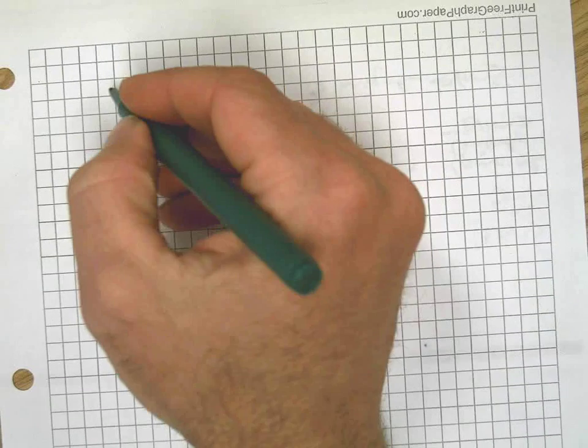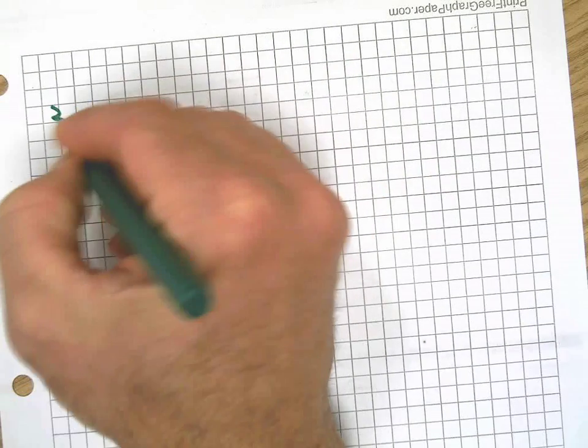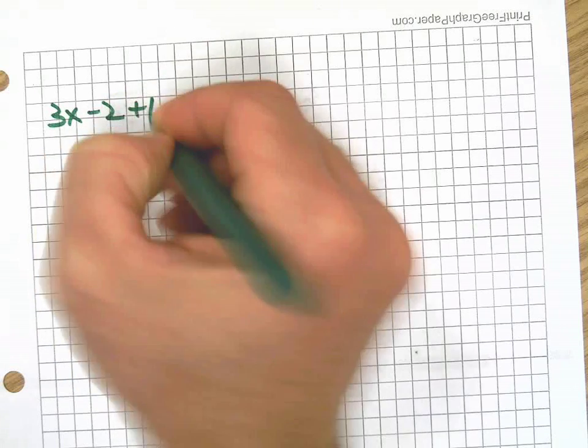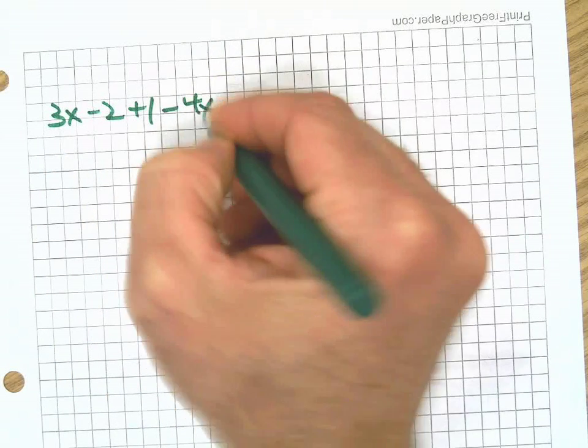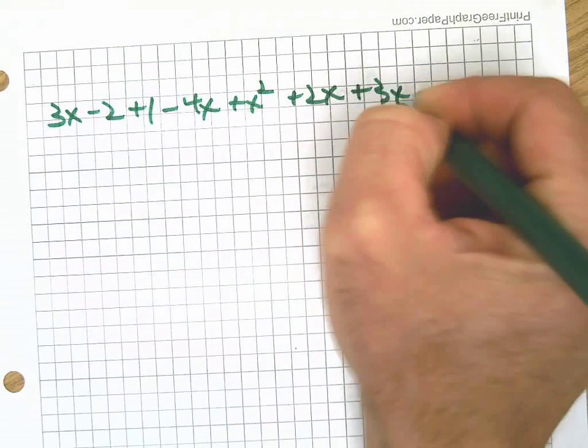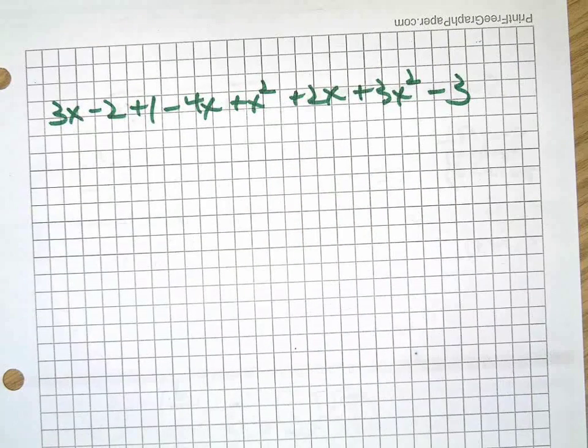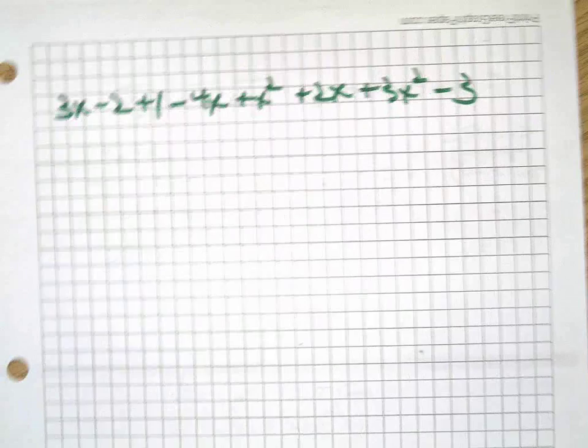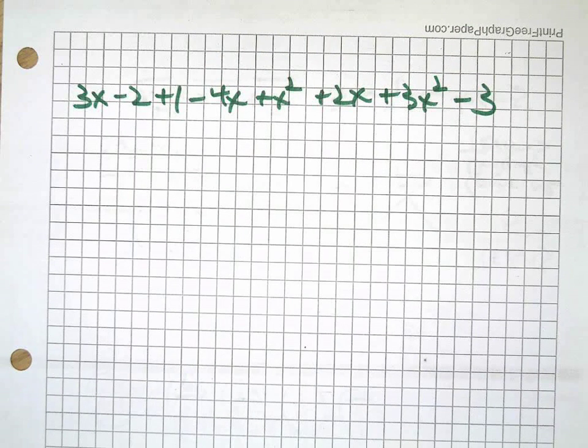We're going to do one more practice here on the back. 3x minus 2 plus 1 minus 4x plus x squared plus 2x, 3x squared minus 3. I just felt like going all the way across the paper there. Hey, take a second and figure out what all the like terms are and put them together. Go ahead. You don't need me.